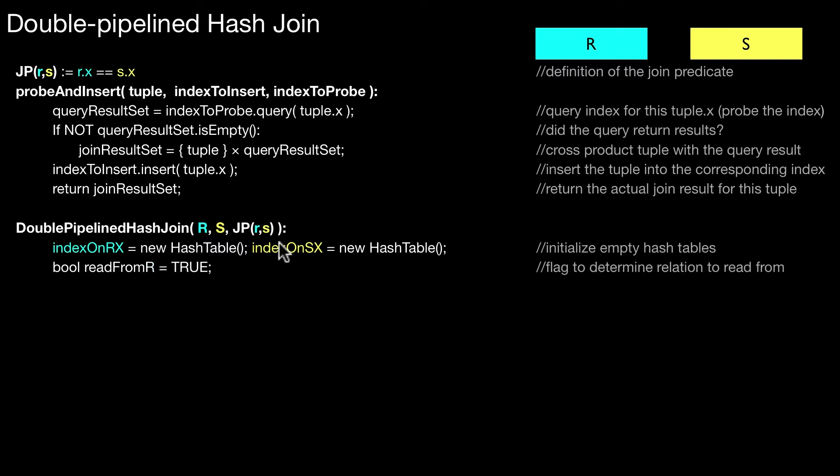Then we have a flag that is determining the strategy, how to draw from the different inputs. Here this is just alternating. I draw from R then from S, always interchanging. But this can be any strategy. Then what I do is while those inputs have some data left, there is something to return.